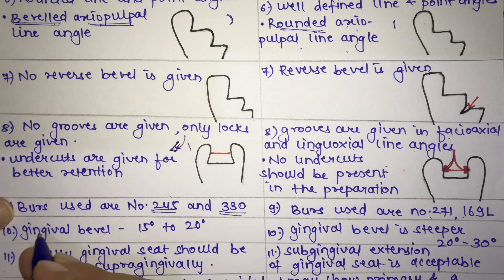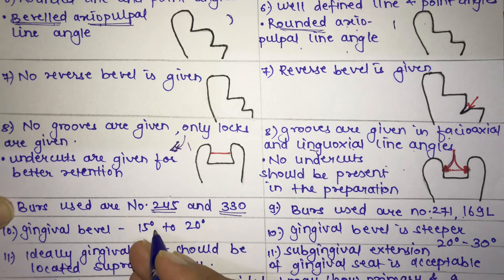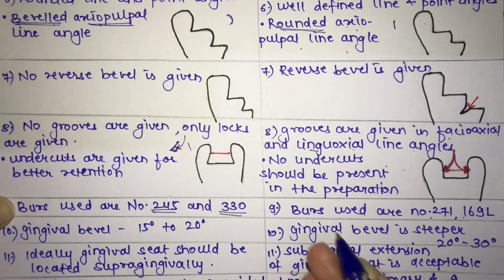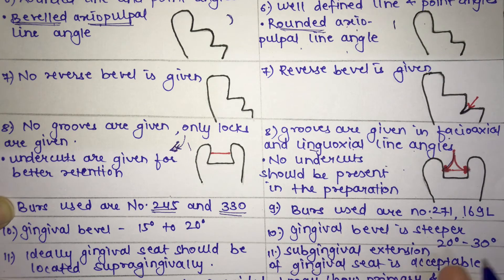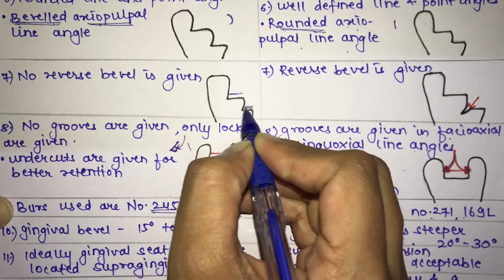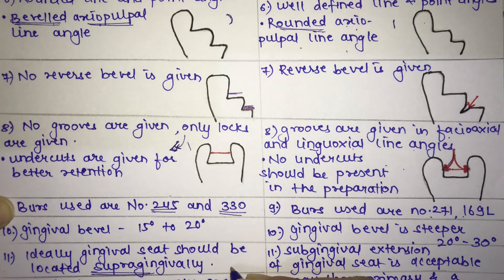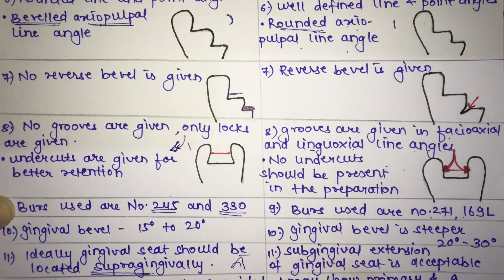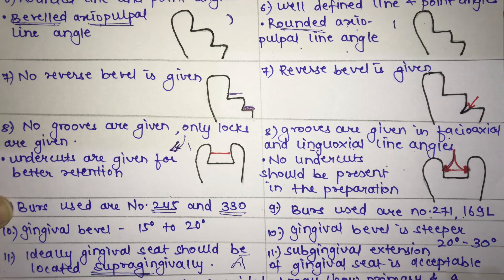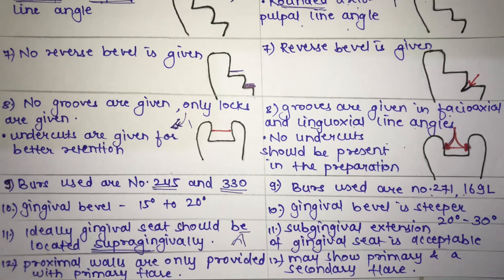In amalgam, the gingival bevel is 15 to 20 degrees. In cast restoration, both occlusal and gingival bevels are given, and the gingival bevel is steeper at 20 to 30 degrees. In Class 2 restoration, the gingival seat should be located supragingivally — above the gingival margin — in amalgam, whereas in cast restoration, subgingival extension of the gingival seat is also acceptable.